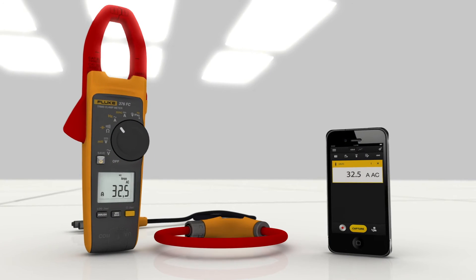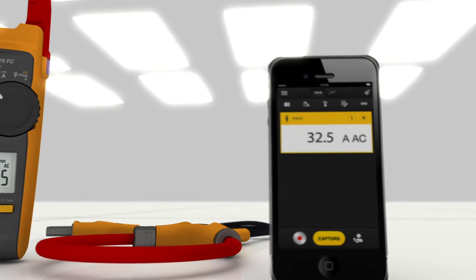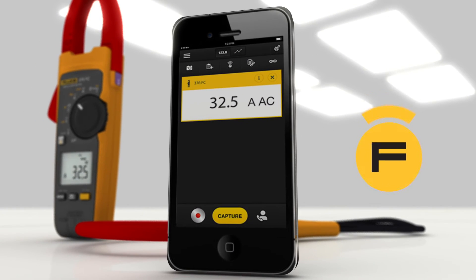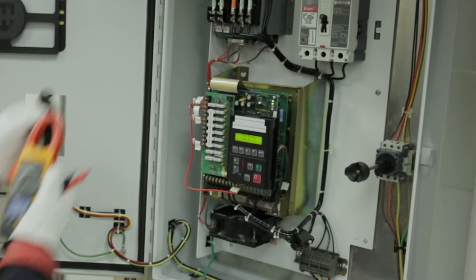use your smartphone with the Fluke Connect mobile app to see, save and share measurements logged by the clamp meter. Find intermittent faults as well as to establish a baseline and trends.